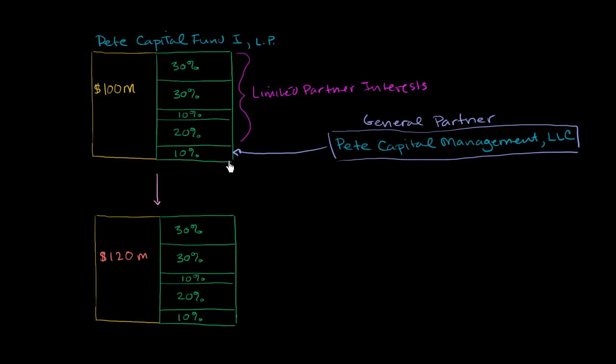10% of that $100 million, or $10 million of it, is coming from Pete Capital Management LLC, Limited Liability Company, which he starts off as the general partner of this fund. And it might be a little bit confusing, but this is one company. This is another company over here. This company is going to manage the assets of that company.